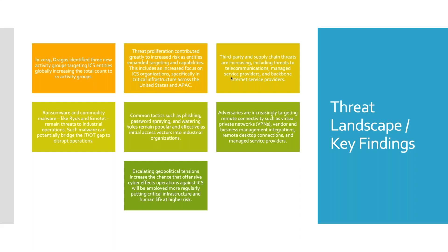Third-party and supply chain threats are also increasing. We're seeing managed service providers, telecommunications providers, and backbone internet service providers getting attacked by targeted threat groups — to prepare man-in-the-middle attacks or to leverage the trusted access that managed service providers have into their clients' environments for nefarious purposes. We've seen this for at least 10 years, but it's still increasing. It makes detection harder because if admins are operating in our environments, sorting out good from bad becomes more difficult.